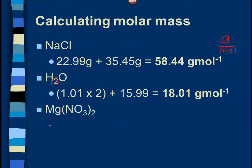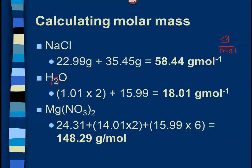Another example: magnesium nitrate, Mg(NO₃)₂. We just look up all three elements on the periodic table. Magnesium is 24.31. We have to remember that the 2 is distributed through the parentheses, so there are two nitrogens and six oxygens. We multiply nitrogen's mass by two, and oxygen's mass by six, then add it all up to get 148.29 grams per mole.